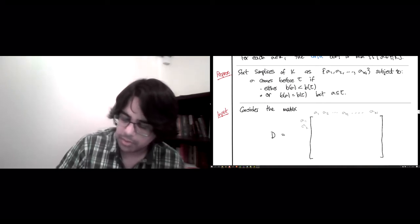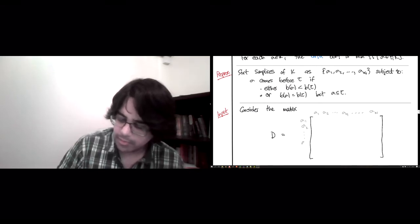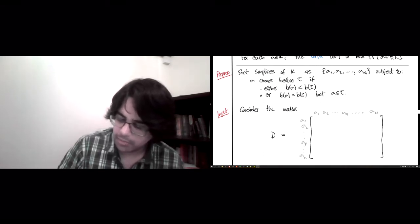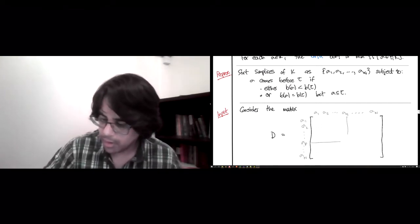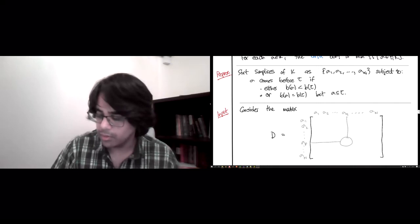And sigma 1, sigma 2, let's say sigma P, and all the way up to sigma big N. And in order to fully specify this matrix, I suppose we should figure out what is in the P-th row and the Q-th column.